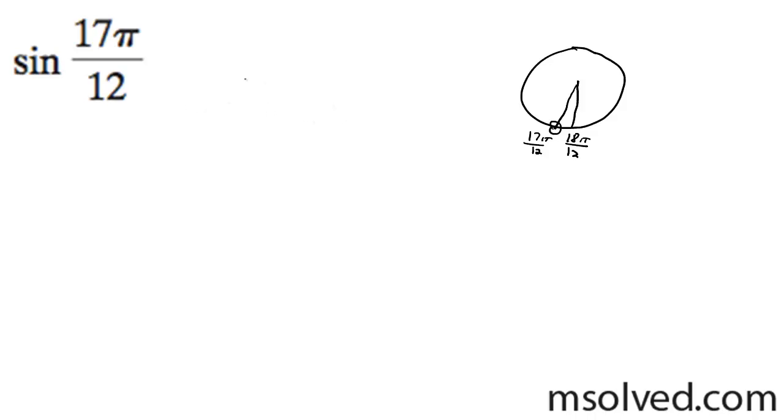So to get started, I can further break this down into two easy parts. It's going to be 15π over 12 plus 2π over 12. And these simplify down to sine of 15π over 12 becomes 5π over 4 plus π over 6.